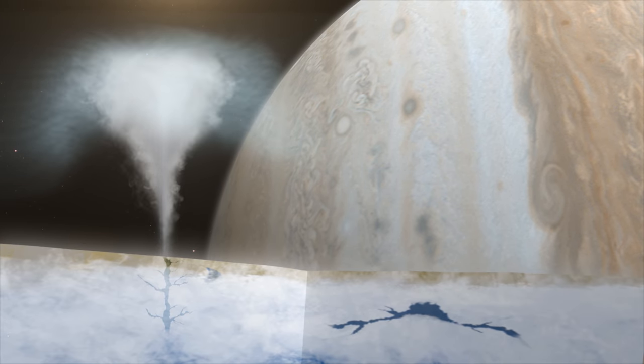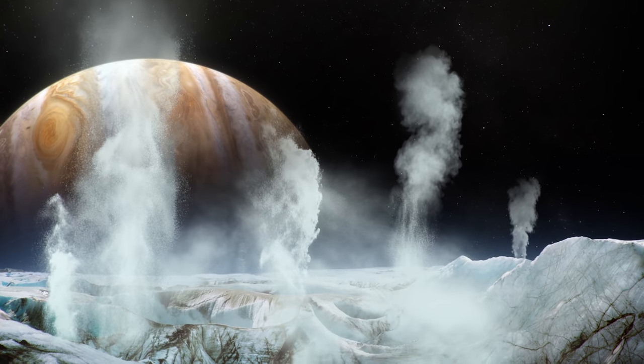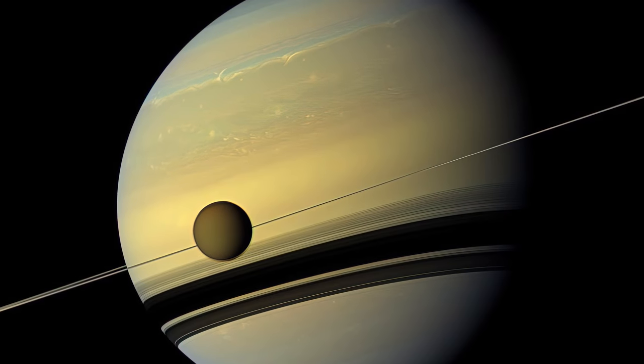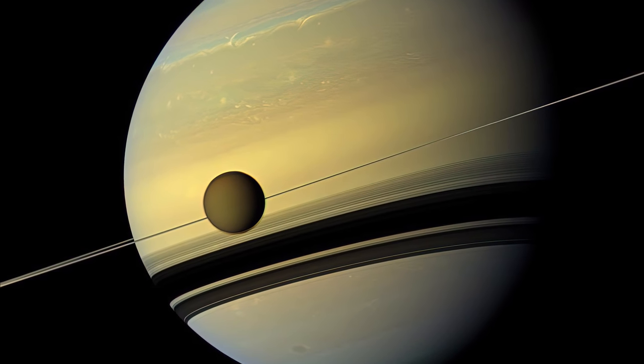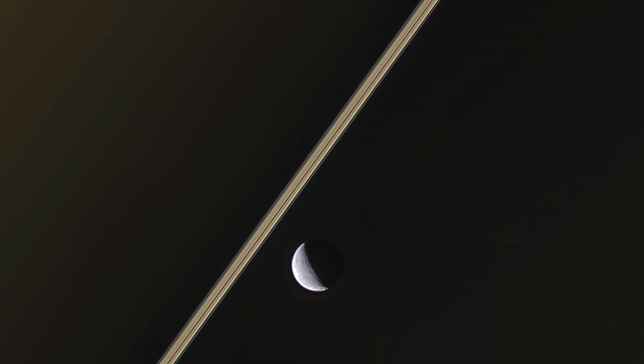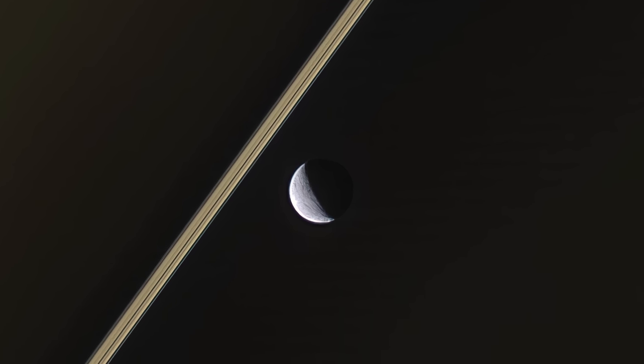Ganymede, Callisto, and especially Europa are nearly certain to host subsurface oceans. Saturn's huge moon Titan and tiny Enceladus each contain a liquid sea beneath their crusts.